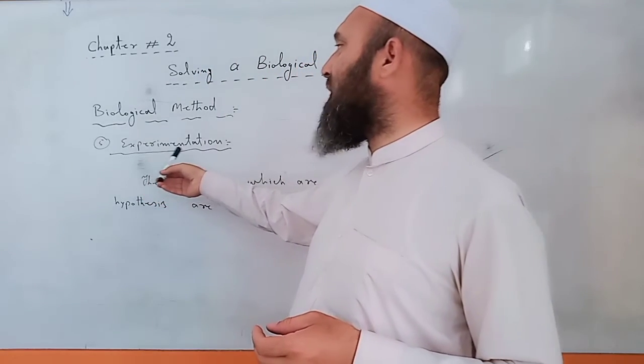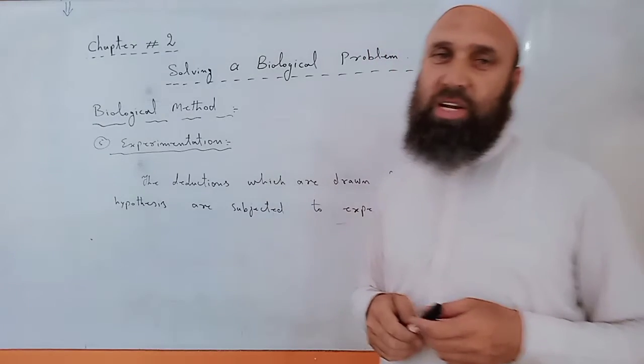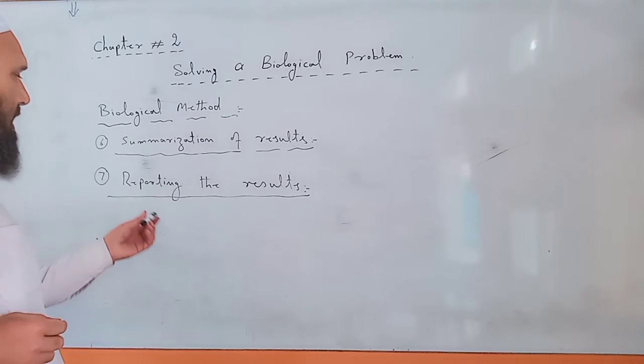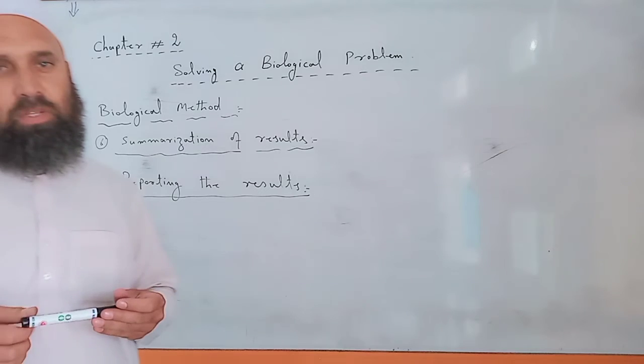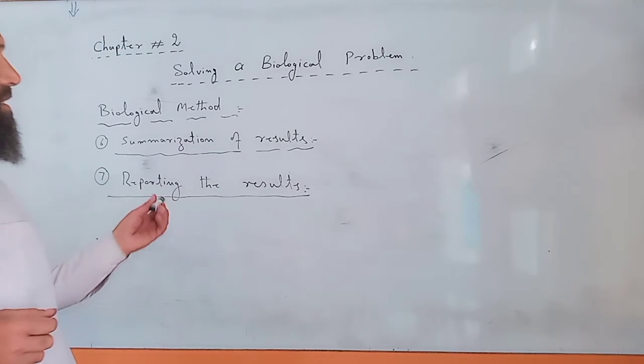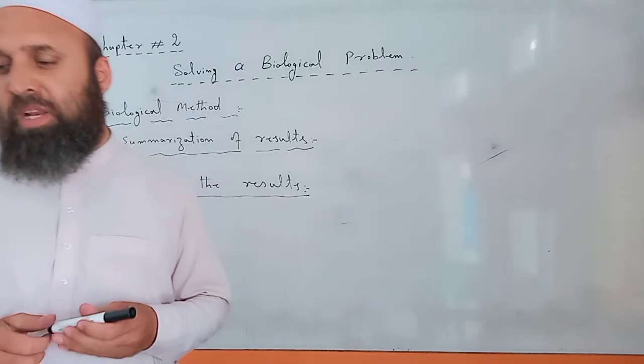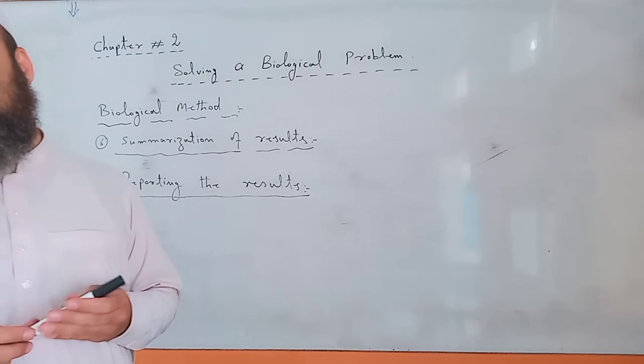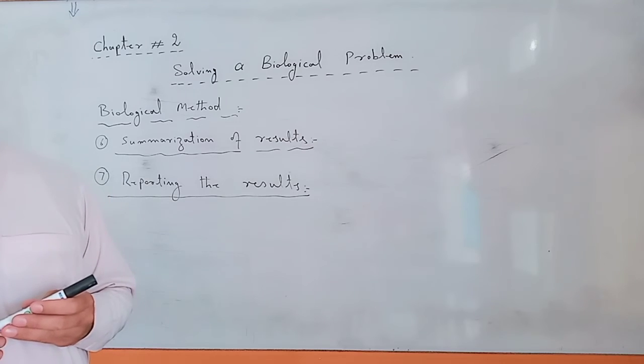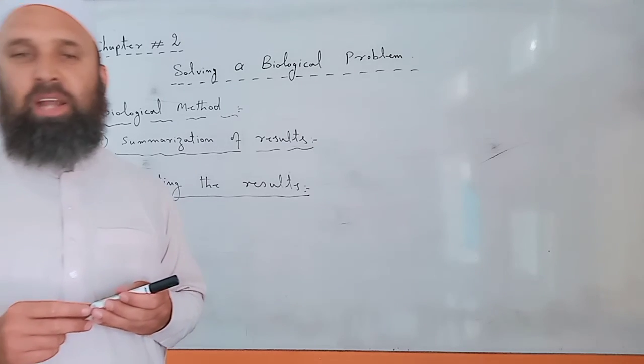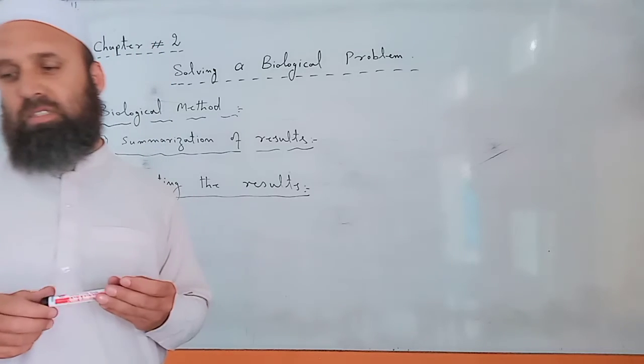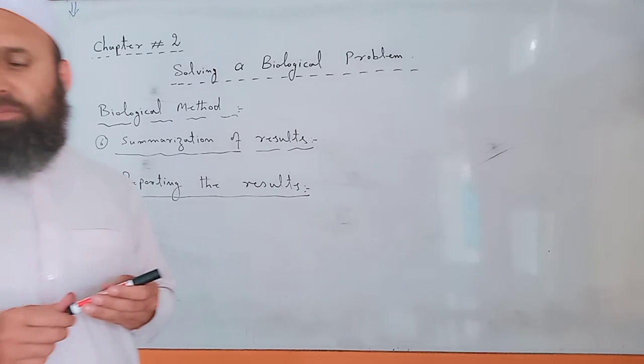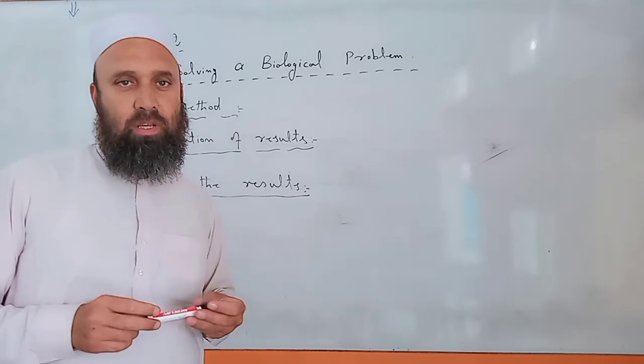This is the fifth step of biological method of study: experimentation. After summarization of results, the last step is reporting the results. During this step, the biologist publishes his conclusion in research articles in scientific journals and books. He also presents his conclusion in science seminars at national and international levels. In this way, the conclusions are verified and the knowledge is then applied to solve a biological problem.